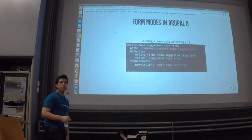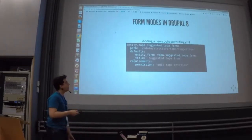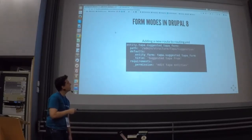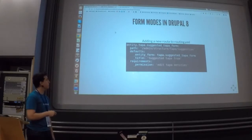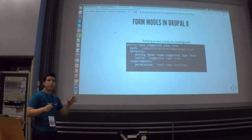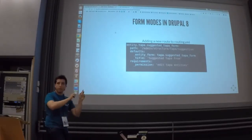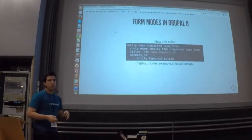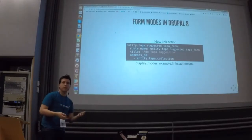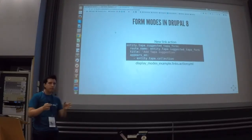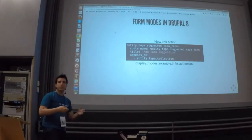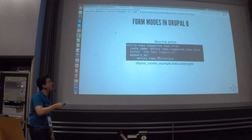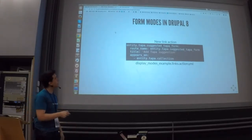The last step is to define a route for our form — just define what path we are going to use and say 'use this entity form' referencing the same machine name we saw before. I also wanted to add a link in the content list so the client can easily click to add a new tapa suggestion — this is just a button in the content list for adding new tapas via the suggested form.